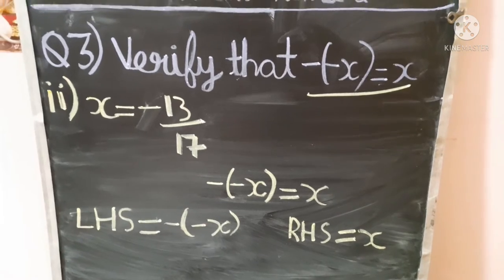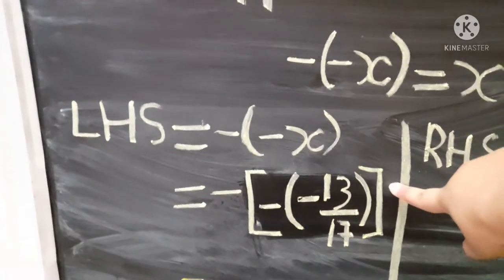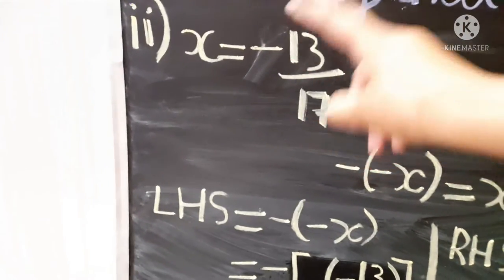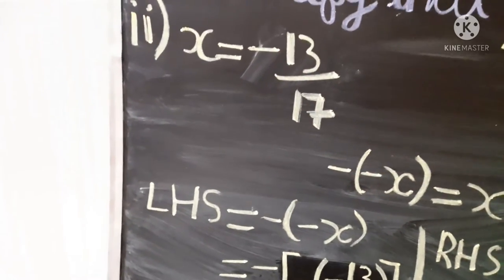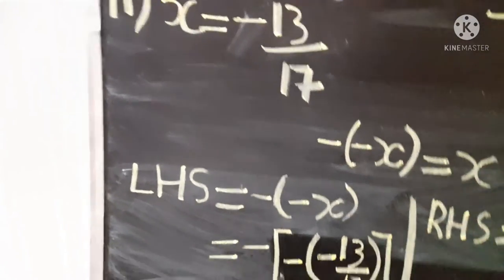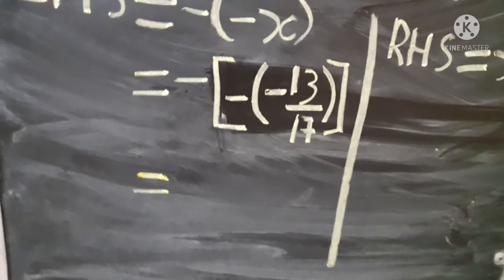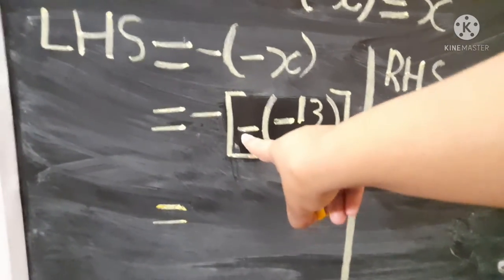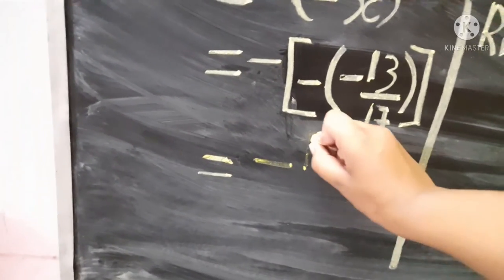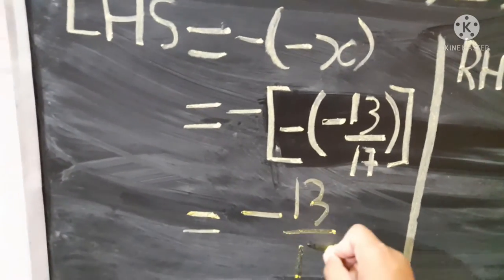For the second part, x equals minus 13 upon 17. I will solve LHS first. I have put a bigger bracket because x already has a minus sign in it, and we are also given two minus signs in the equation — so I put one bigger bracket to avoid confusion. Solving: minus, minus, minus gives plus, plus, plus, minus — so it becomes minus 13 upon 17.